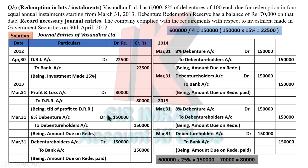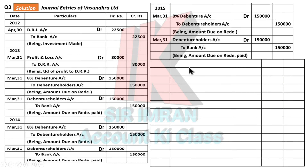For the third installment in 2015: same entries — 8% Debenture to Debenture Holder, Debenture Holder to Bank Rs. 1,50,000. Third installment is complete. Now the fourth and last installment in 2016: in the last year, DRI has to be encashed first, so the entry is Bank to DRI Rs. 22,500. Then you process the 4th installment with the same two entries.